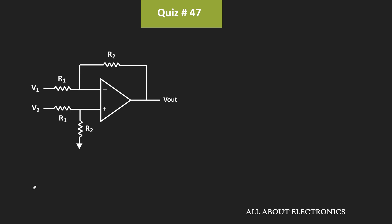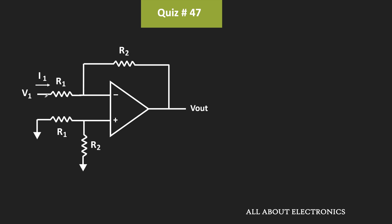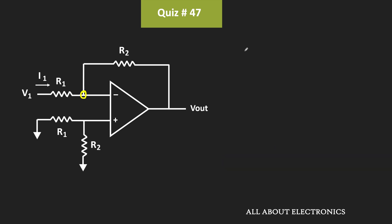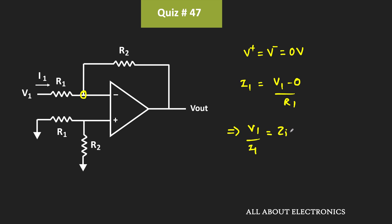First, let us find the input impedance seen by looking into input voltage source V1. For that, we will consider voltage source V2 as 0. The current flowing through resistor R1 is equal to I1. Since V2 is equal to 0, no current flows through R1 and R2, meaning the non-inverting terminal is connected to ground through R1 and R2. Due to negative feedback, we can apply the concept of virtual ground, so the inverting terminal is also at ground potential — V+ equals V− equals 0 volts. Therefore, current I1 equals V1 minus 0 divided by R1, and the input impedance V1 divided by I1 equals R1.